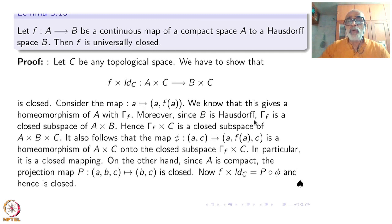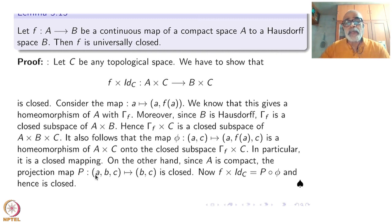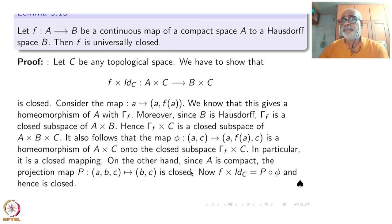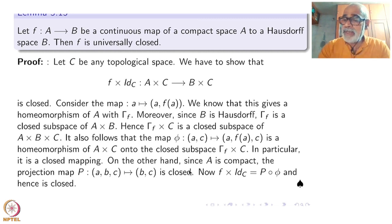Now we use the fact that A is compact. If A is compact, the projection map from A cross B cross C to B cross C — projecting away from A — is a closed map. We have seen that the projection map from X cross Y to X, where Y is compact, is always a closed map.